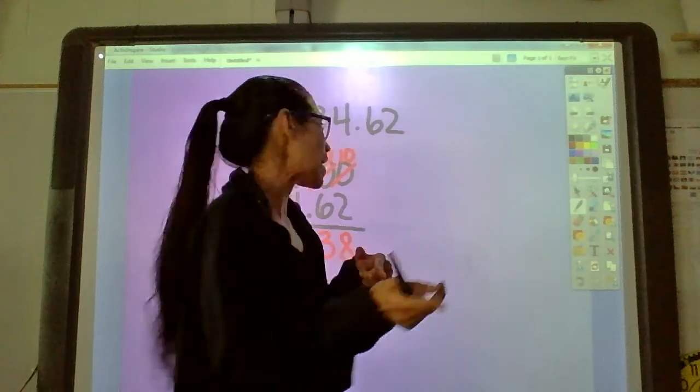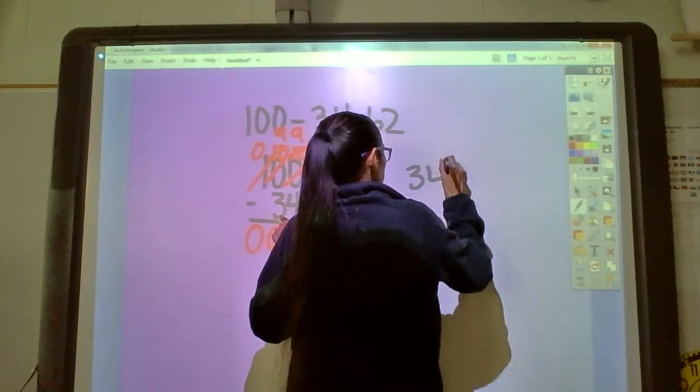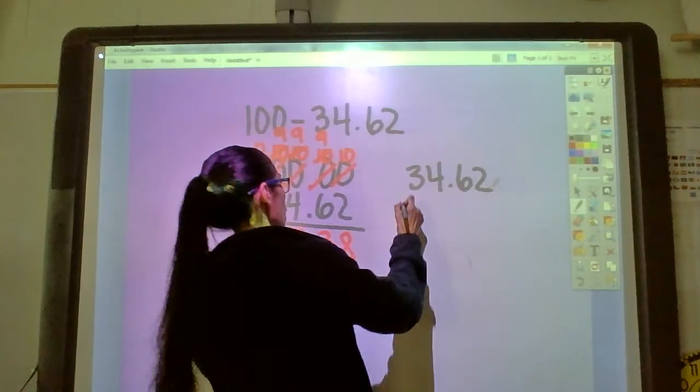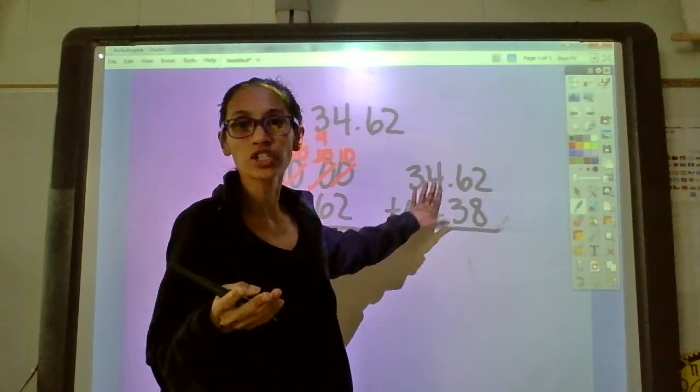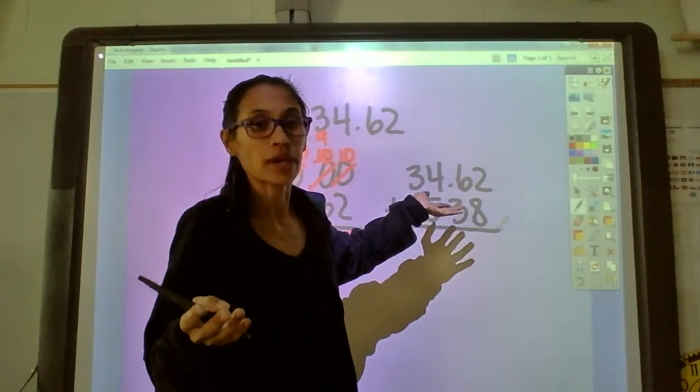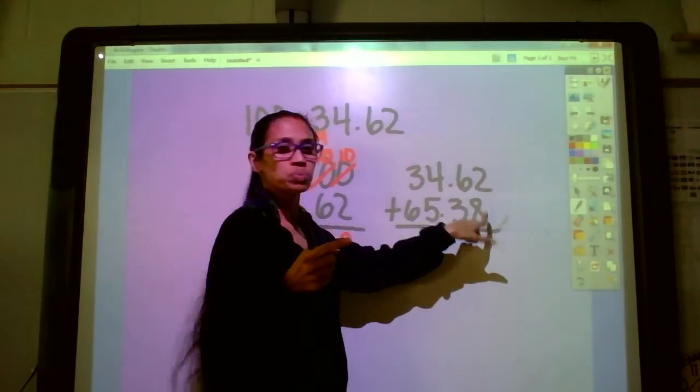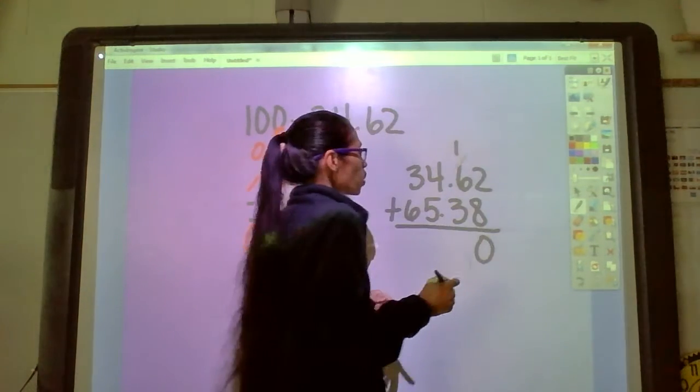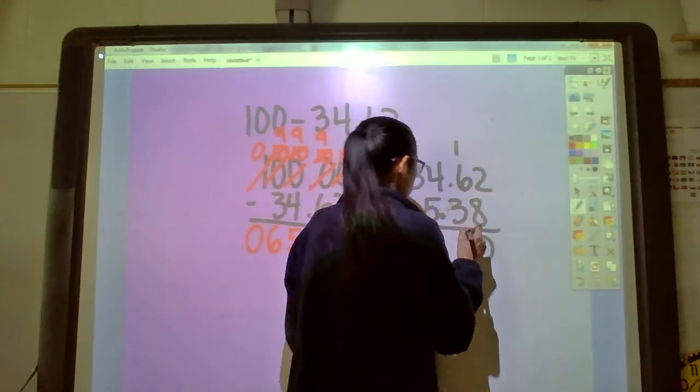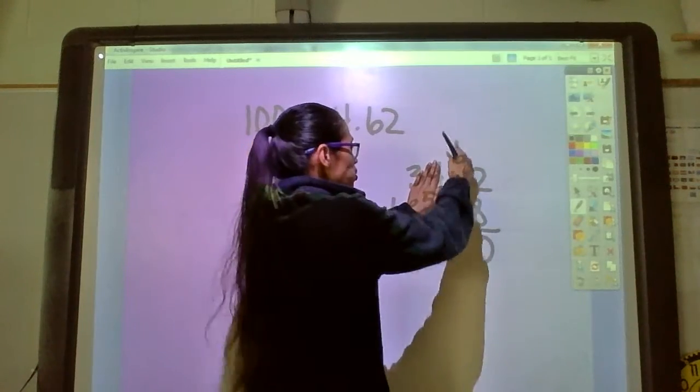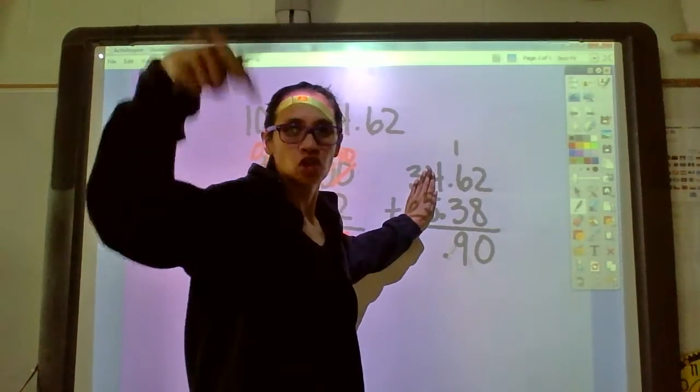Now that we subtracted, we'll check it by adding. Let's see, 34.62 plus 65.38. Now it actually doesn't matter which number you put first, you'll get the same answer as long as you added it correctly. So let's add. You ready to add? Let's add. 2 plus 8 is 10 plus 0, carry the 1. Oh my goodness you see how my decimals are not lined up perfectly?